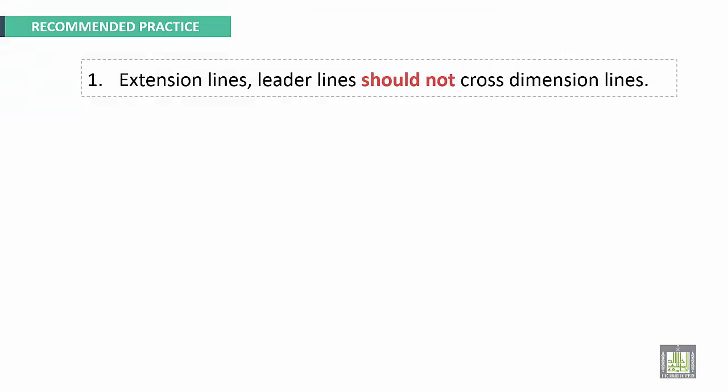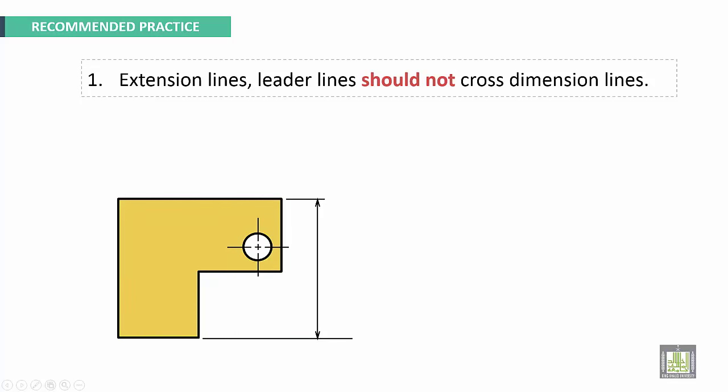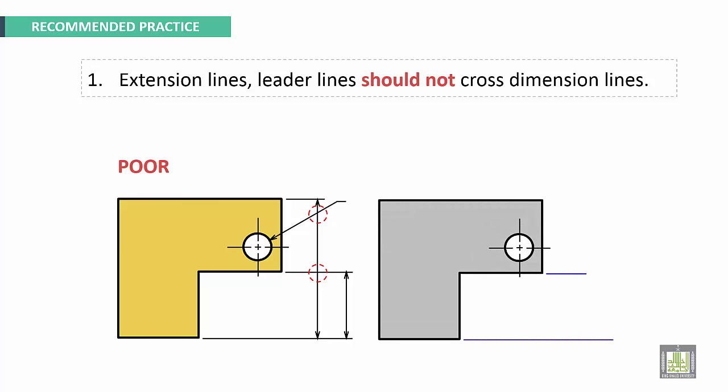Recommended practices: Extension lines and leader lines should not cross dimension lines. Here we have an example. Here we have a leader line crossing a dimension line, and here also we have an extension line crossing a dimension line. This is poor. The good representation is the following: this is the first dimension, this is the second dimension, and this is the leader line. This is good.